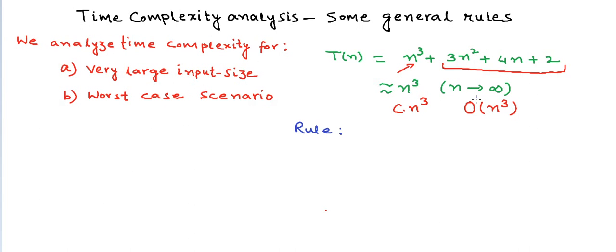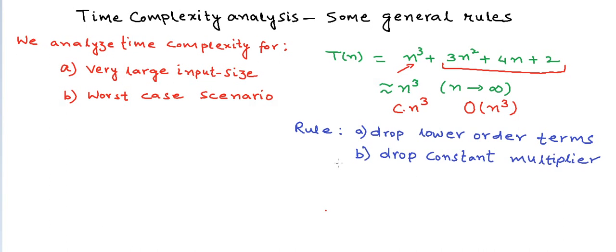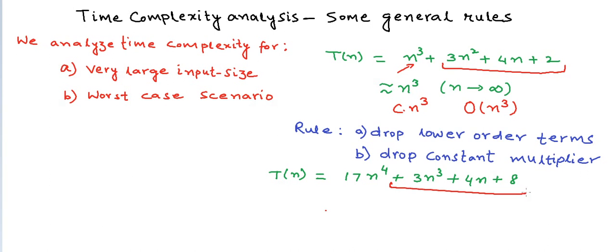The first rule is: if you want to calculate the Big O notation from a polynomial expression, you need to drop all the lower order terms and also drop the constant multiplier, and you will get the Big O expression. For example, if T(n) = 17n⁴ + 3n³ + 4n + 8, you first drop the lower order terms and keep only the highest power, which is n⁴, and then drop the constant multiplier 17. So this will be Big O of n⁴.